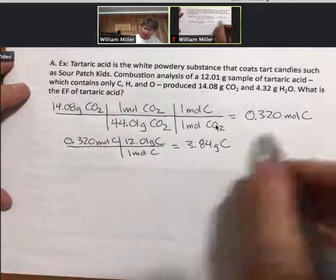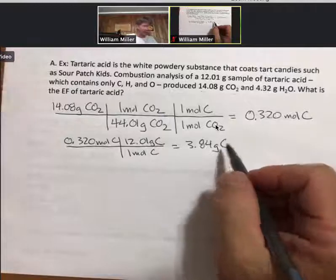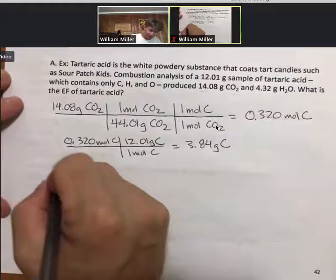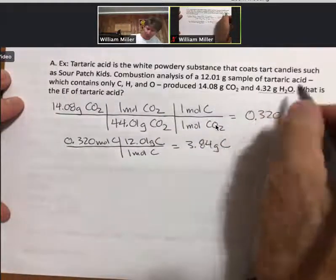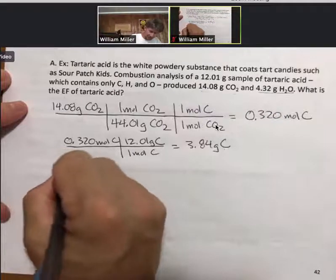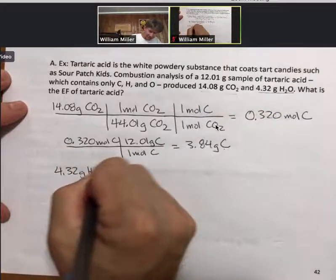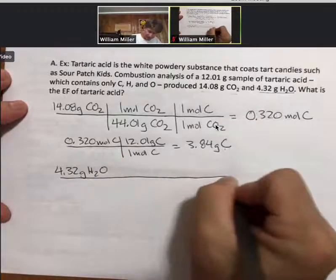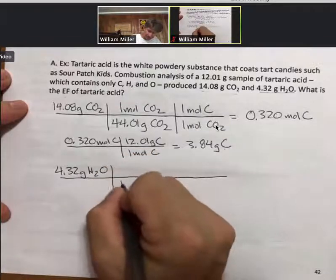All right, so now we know how many grams and moles of carbon are in our unknown. Now let's do the same thing for H2O. We're going to turn grams of H2O into moles of H2O using the molar mass.